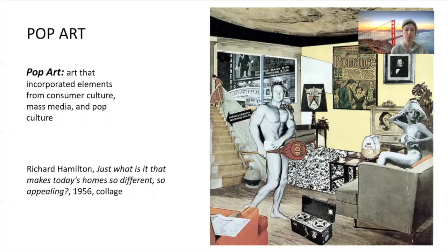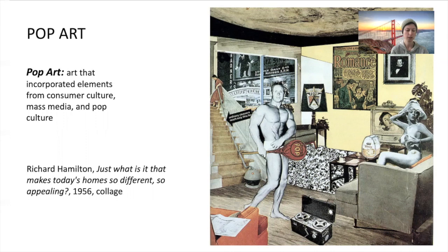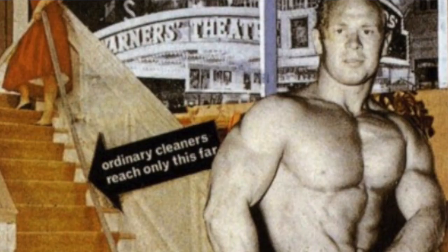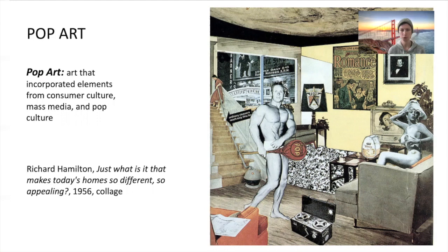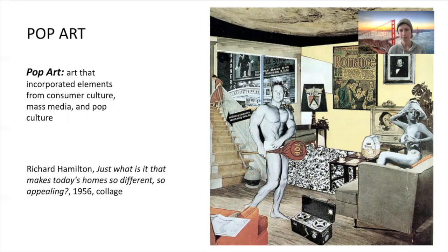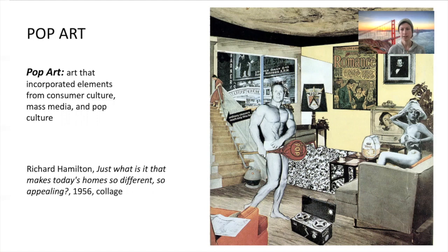Here we're looking at one of the first pop art pieces by Richard Hamilton, a British artist, called Just What Is It That Makes Today's Homes So Different, So Appealing? You may notice that the artist has taken inspiration from magazines, newspapers, comic books, and advertising. He's combined all of these different references to pop culture, mass culture, advertising, and art. The painting in the background is a reference to Jackson Pollock. He's combined all of these elements into a work that emulates what you might see when flipping through a magazine — this emphasis on consumer culture and the combination of high and low elements.